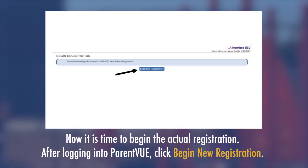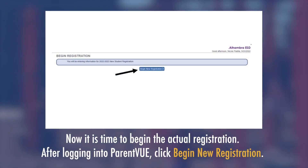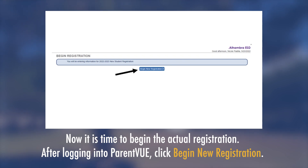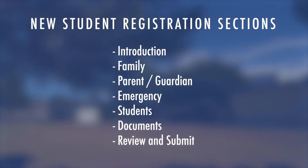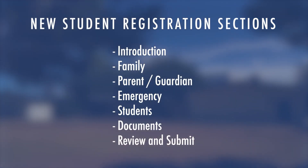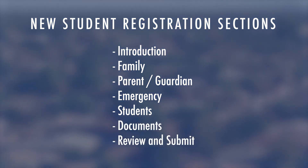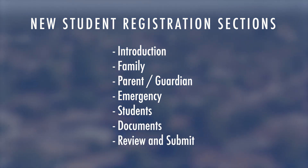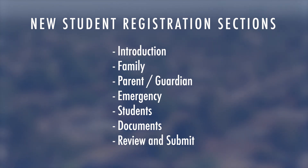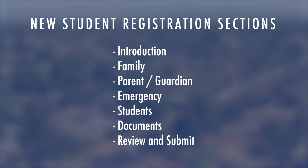Chapter 4: Online Registration Overview. Now it is time to begin the actual registration. After logging into Parent View, click 'Begin New Registration.' The registration has seven sections: Introduction, Family, Parent/Guardian, Emergency, Students, Documents, and Review and Submit.